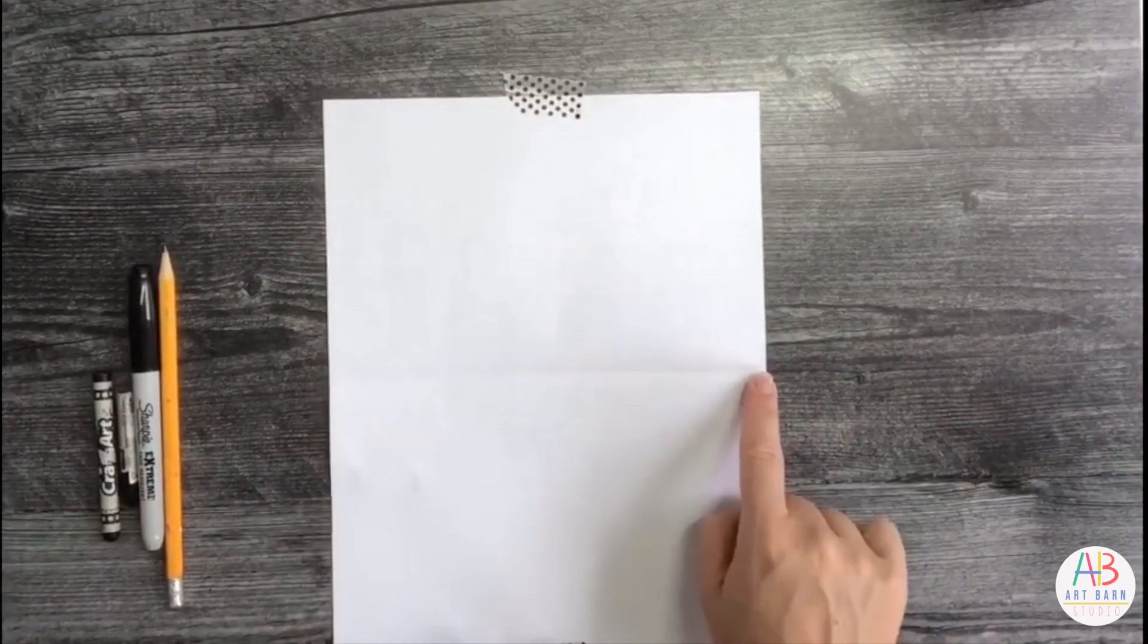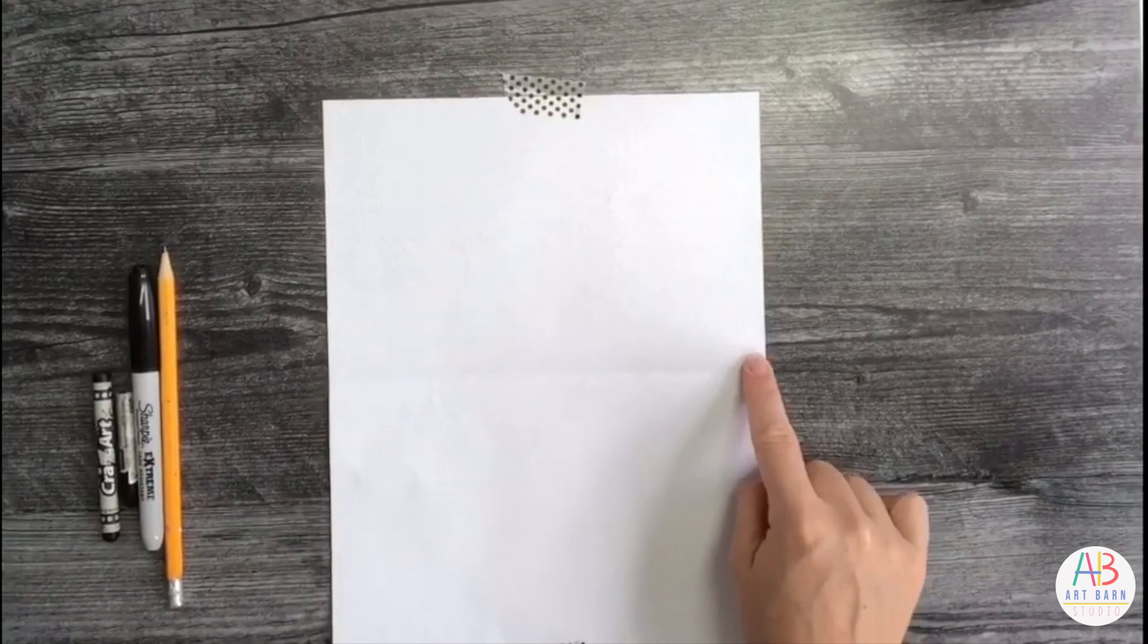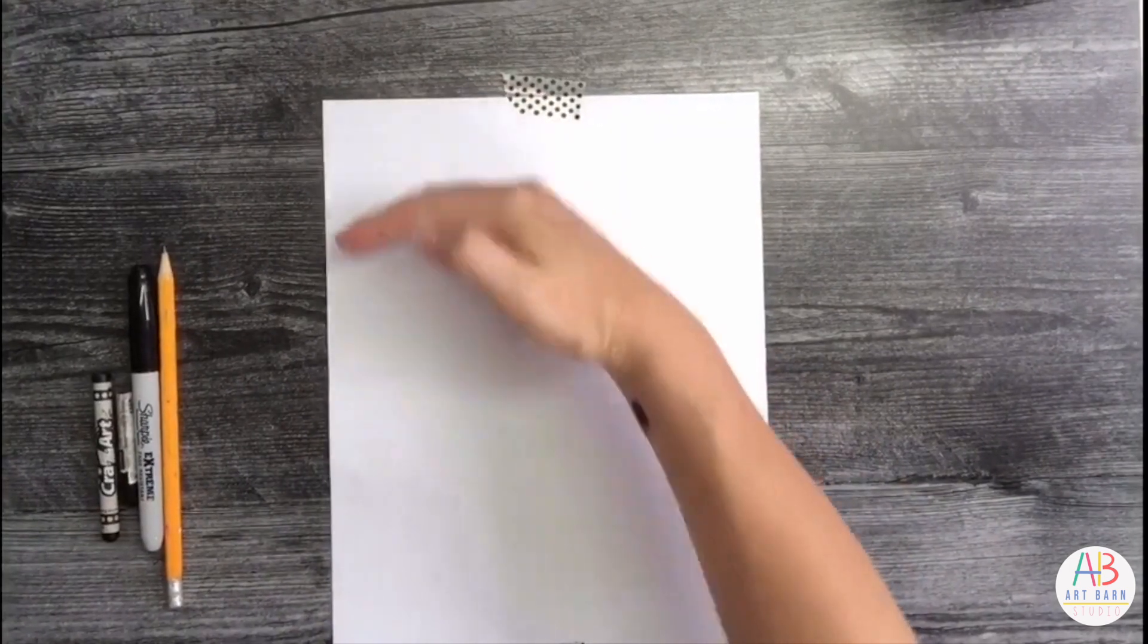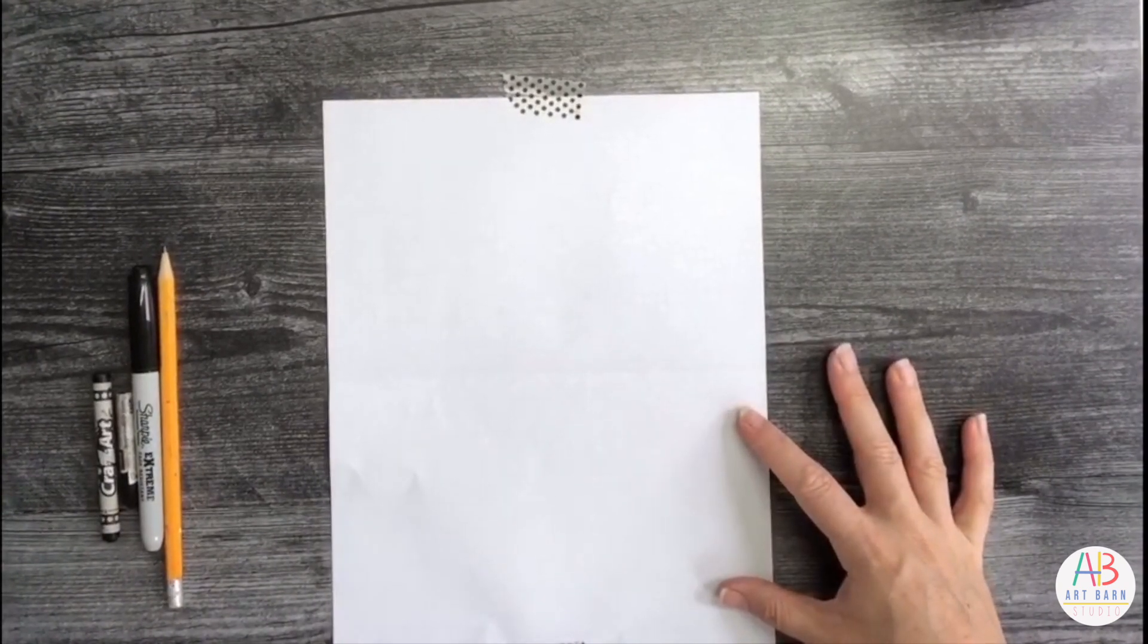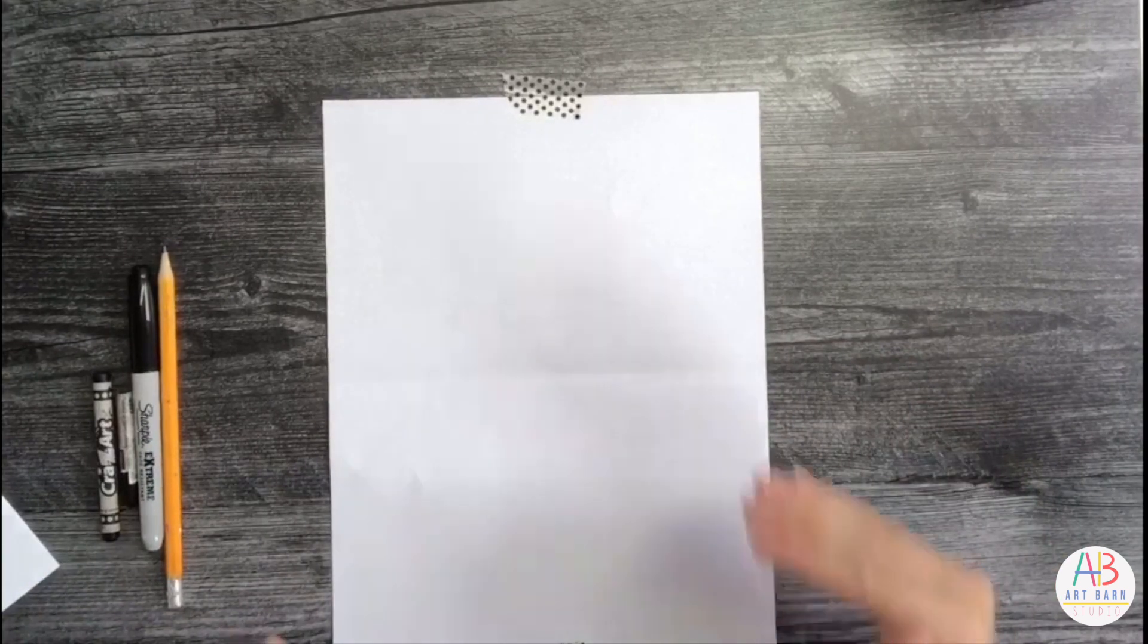This is our invisible line right here. I'm not going to take a pencil and draw a line, I just want to see it from where the fold is. That's letting Miss Lawson know that I'm going to be drawing the head above this fold, and then the neck will be going across and the body will be coming down on the bottom of that fold.